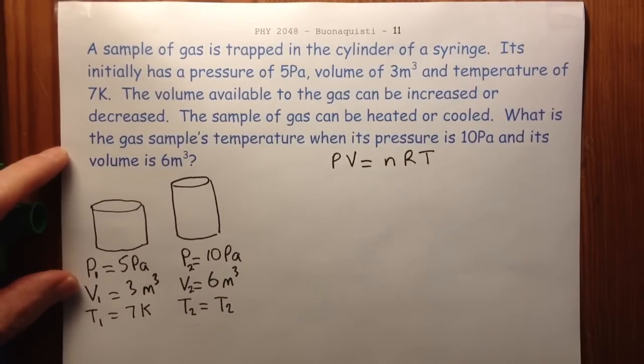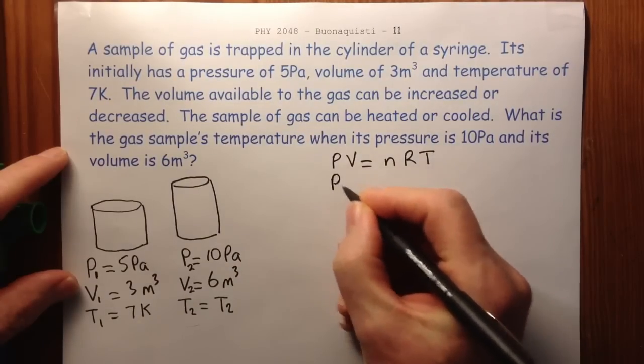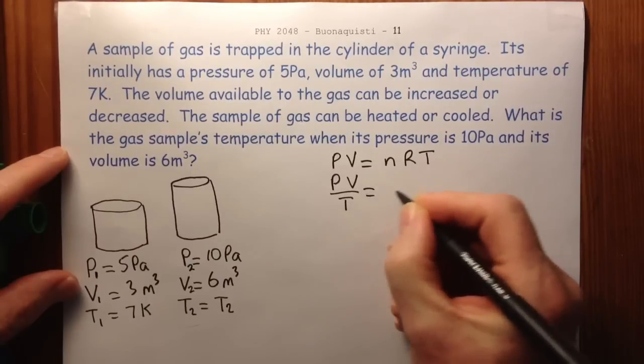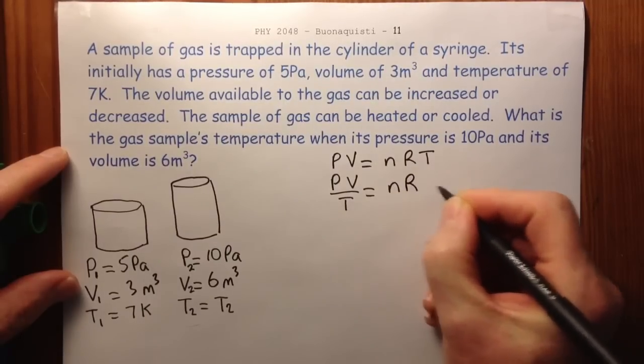R is the universal gas constant and T is the absolute temperature. And if we rearrange this, we see that PV over T is equal to n times R.